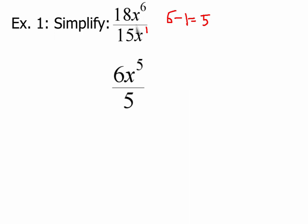All right, so there's no factoring to do. I just simplify by dividing both 18 and 15 by 3. And x to the 6th divided by x to the 1st is x to the 5th.